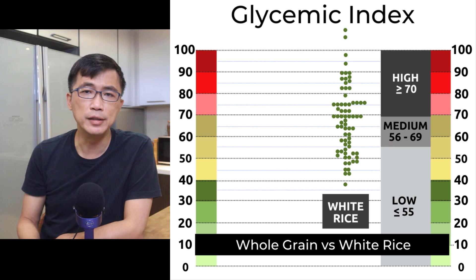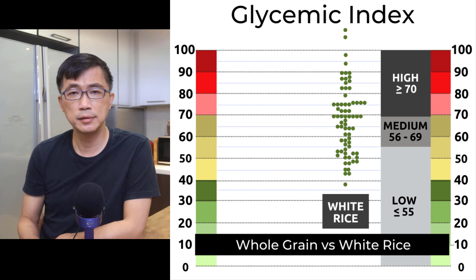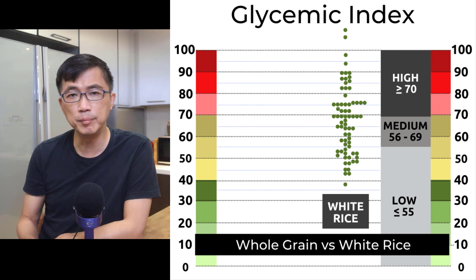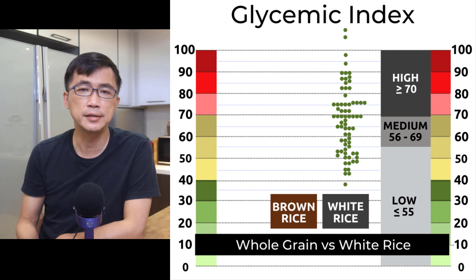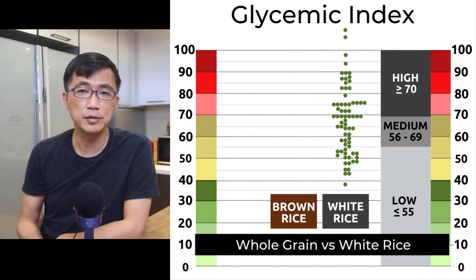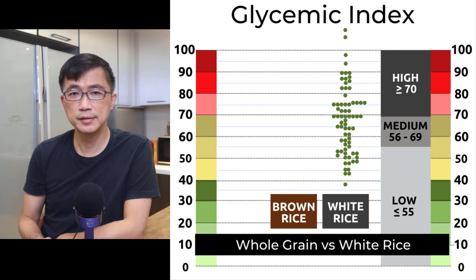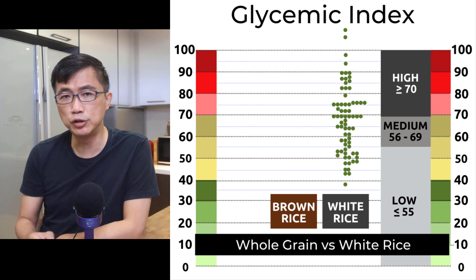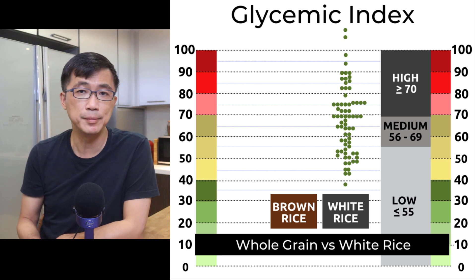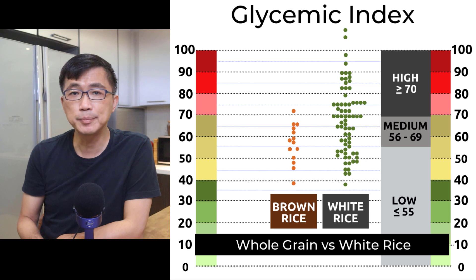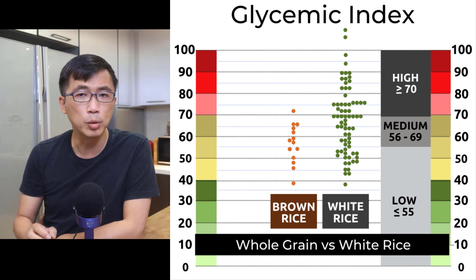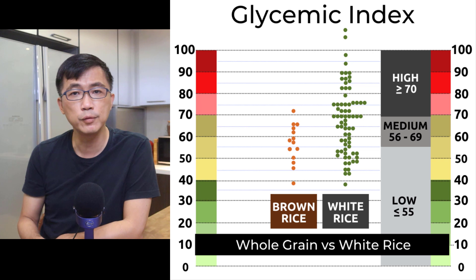Next, let's compare the GI of polished rice — that is white rice — with whole grain rice, starting with the common brown rice. Regardless of the type of brown rice, whether it is brown jasmine rice, brown basmati rice, or other types of brown rice, I plotted on this scale the GI value of each record I could find in the GI database. And as expected, we can see that the GI of brown rice is in general lower than that of white rice.